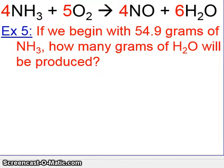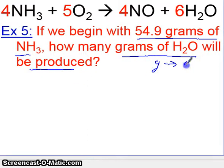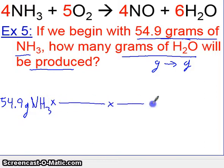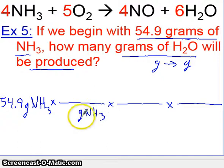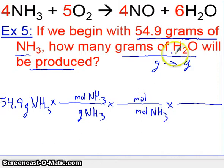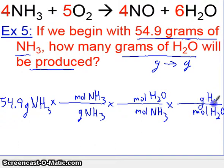Here is what an Episode 3 problem looks like. If we begin with 54.9 grams of NH3, how many grams of H2O will be produced? This is a grams-to-grams conversion, and grams-to-grams requires three steps. Begin with the number given — 54.9 grams of NH3 — and set up three conversion steps. Since we begin with grams of NH3, that goes at the bottom. We'll first convert to moles of NH3, then go from moles of NH3 to moles of H2O, and finally from moles of H2O to grams of H2O.